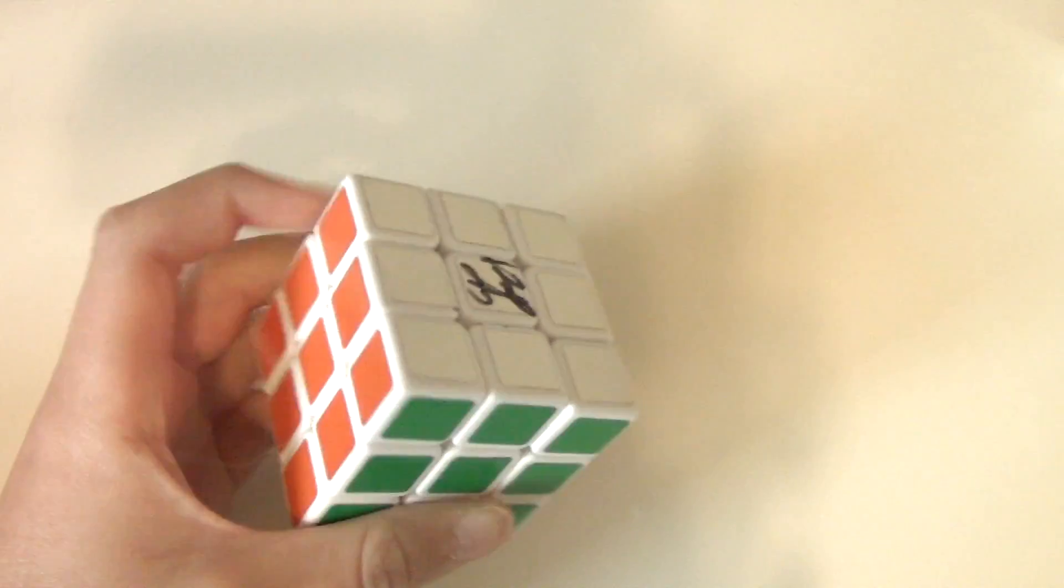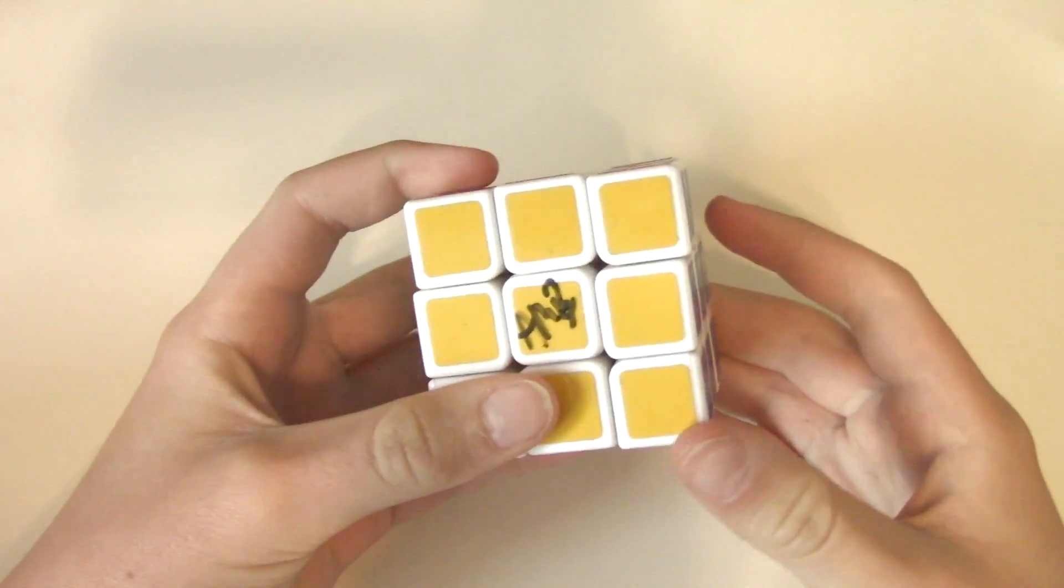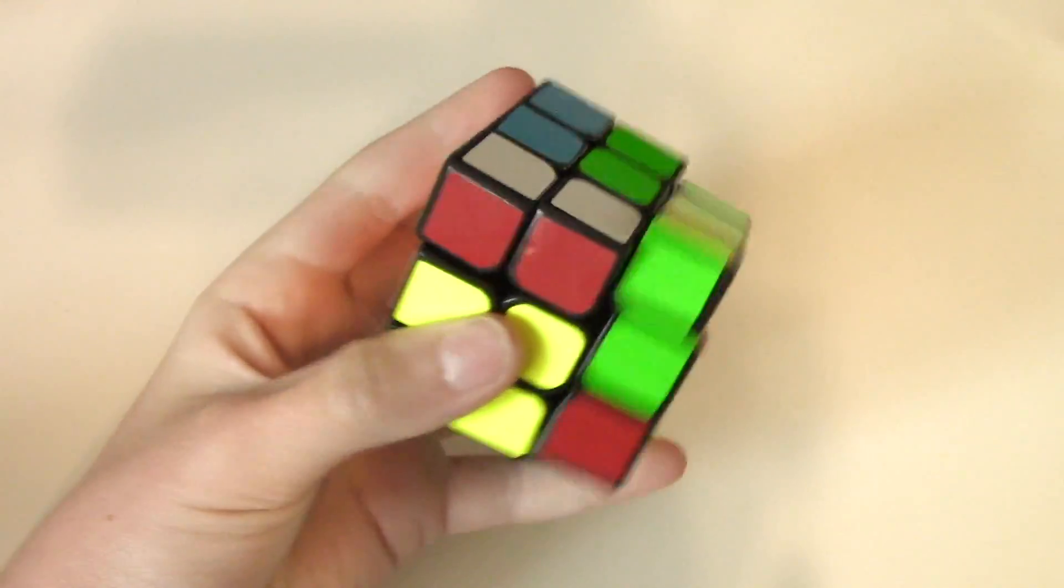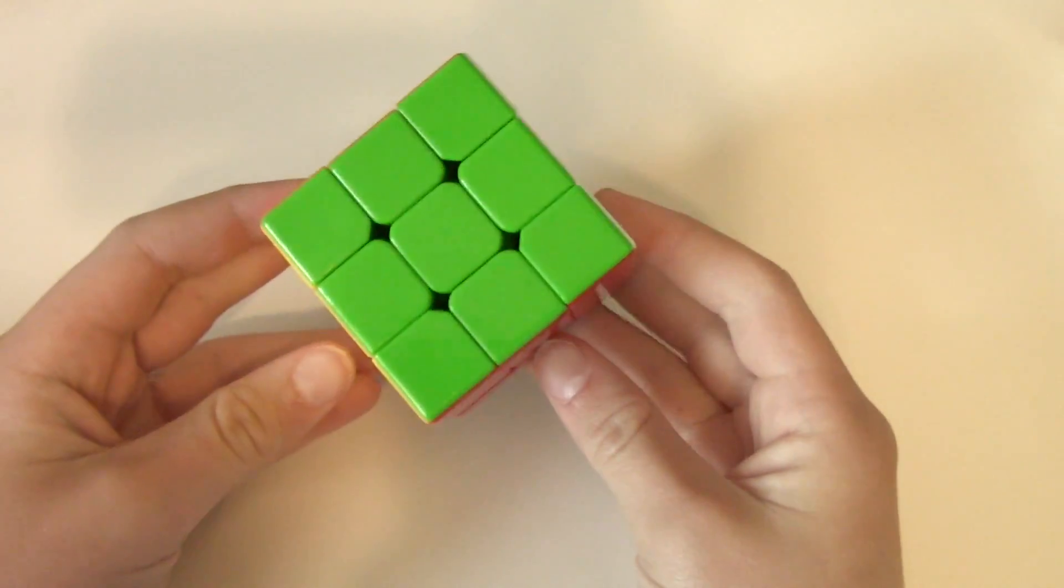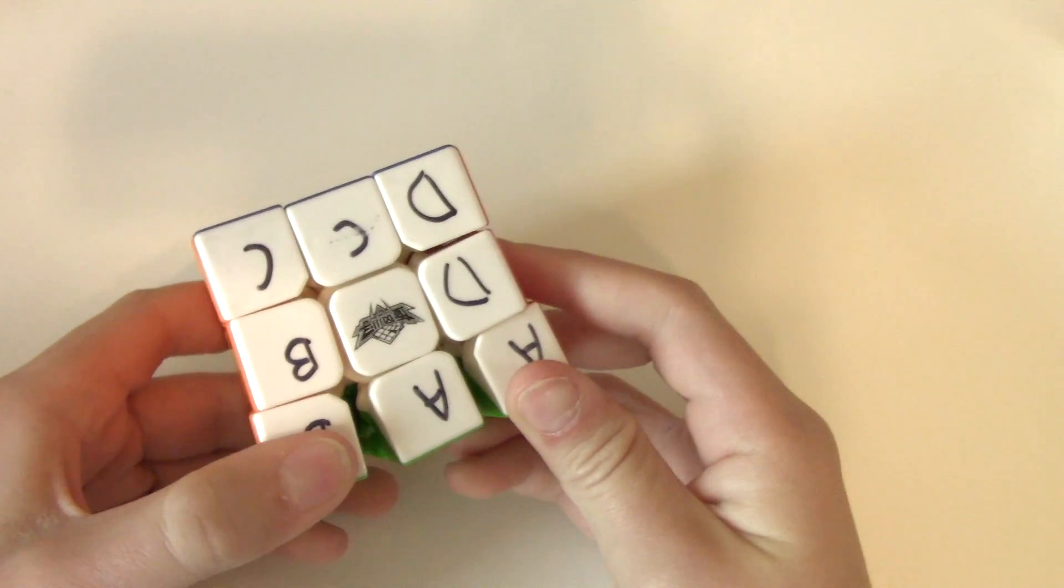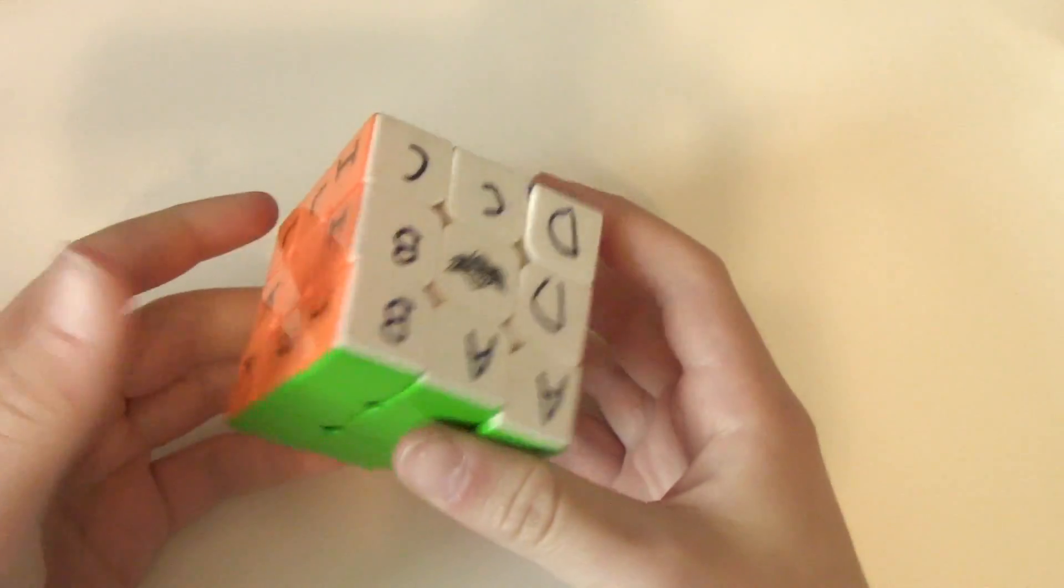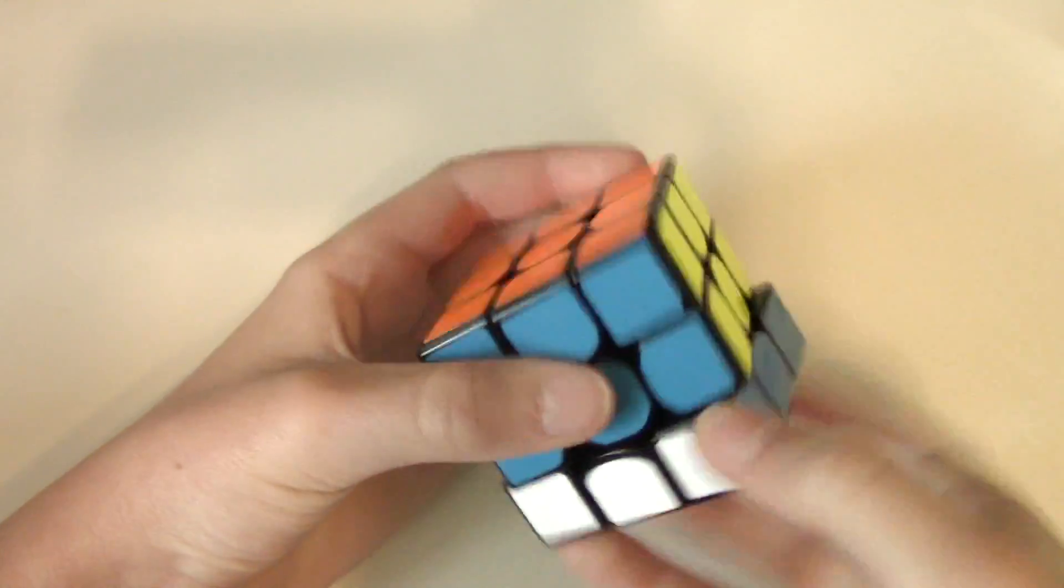This is my first ever speedcube, a Xing Shou Wind signed by Colorful Pockets and Anthony Brooks. This is my OH main, a 54.6mm Weilong. This is the Cyclone Boys Strengthen version that I started to write letters on so I could learn blind, but then I messed up so this thing is kind of just trash now. This is a Gan 356 with the V2 center caps. This is a Thunderclap V2. Never buy this cube.